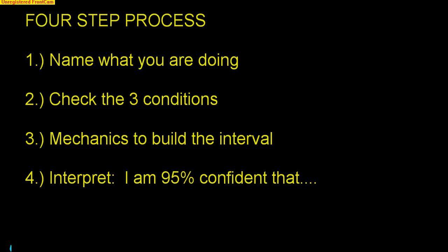Let me review the three conditions. Condition one: the sample must be random. Condition two: the sample must be less than 10% of the population to assume independence. Condition three is the big enough condition, which we'll discuss at length. Step three is the mechanics to build the interval, very similar to proportions. And lastly, we interpret the interval.